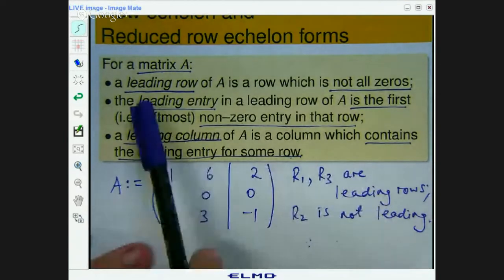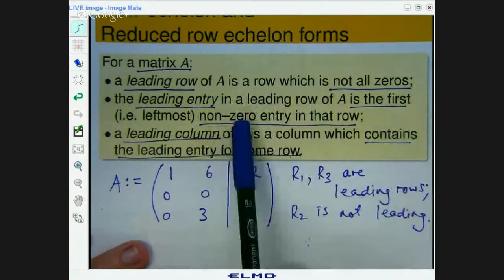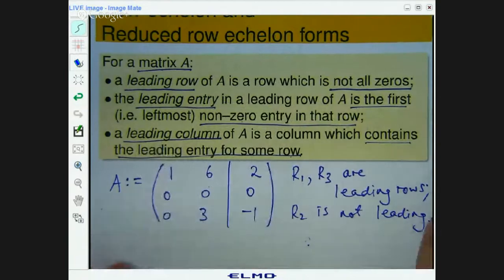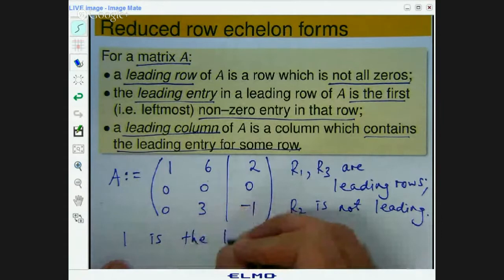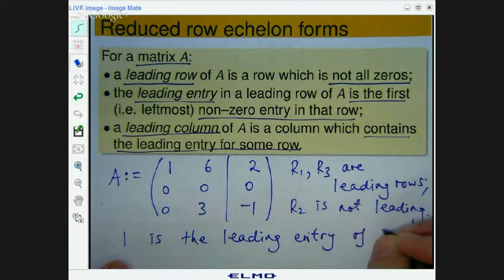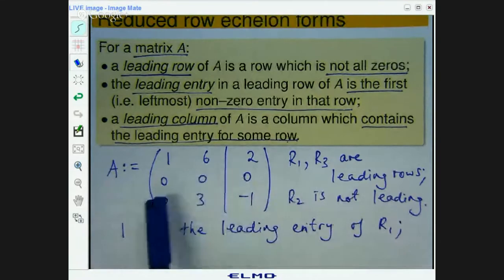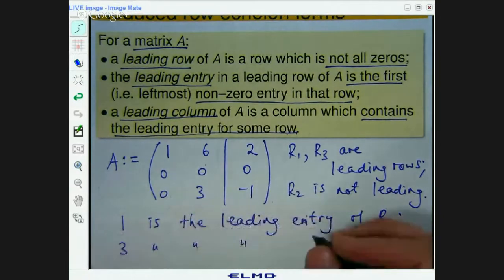Let us identify some of the leading entries. Ok, so let's look at all the leading rows and find the first non-zero entry. Ok, so R1 is leading, so 1 is the leading entry of row 1. Row 2 is not leading, so we can cross it out. And 3 is the leading entry of row 3. Ok, great.